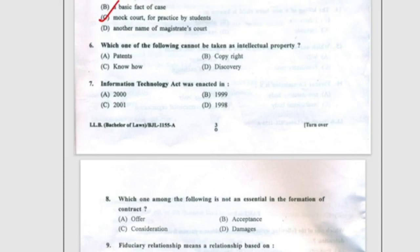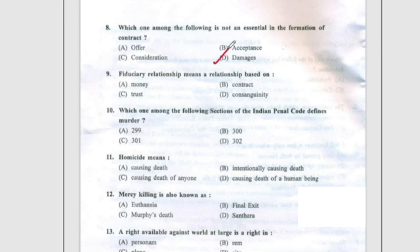Question 6: Which one of the following cannot be taken as intellectual property? The answer is 'discovery', option D. Question 7: The Information Technology Act was enacted in 2000. Question 8: Which one among the following is not an essential in the formation of a contract? The correct answer is 'damages', option D. Question 9: Fiduciary relationship means a relationship based on trust, option C. Question 10: Which section of the Indian Penal Code defines murder? The correct answer is Section 300, option B.